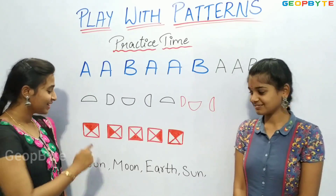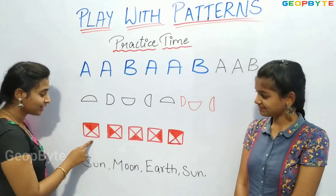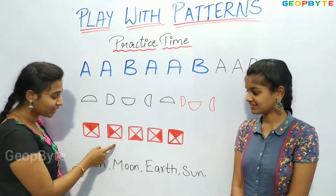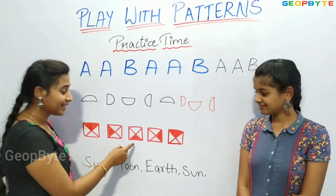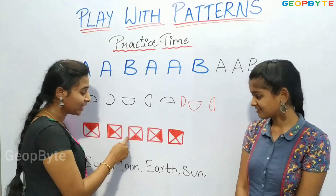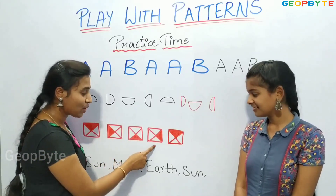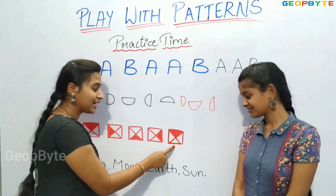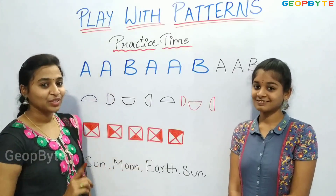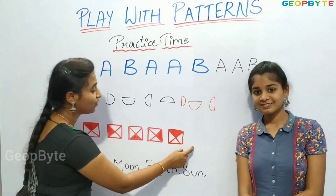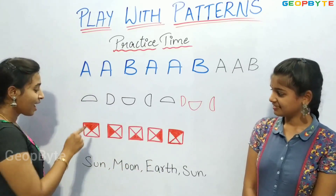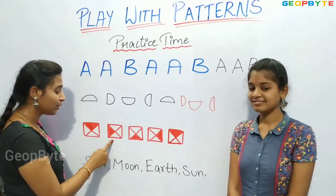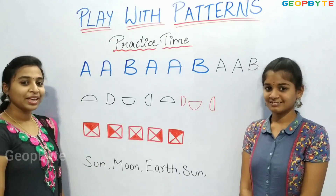Children, see this pattern. We have this box filled with the top triangle. In this box it is filled with the left triangle. In this box it is filled with the down triangle. In this box it is filled with the right side triangle. Again, in this box it is filled with the top triangle. Children, after this box, which box will come? After the triangle filled with the top one, we have the triangle filled with the left one. So let us draw this.